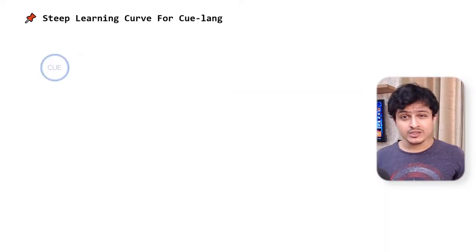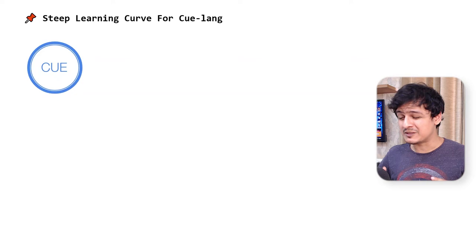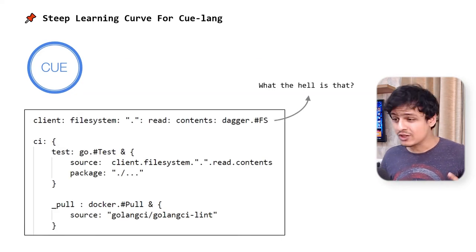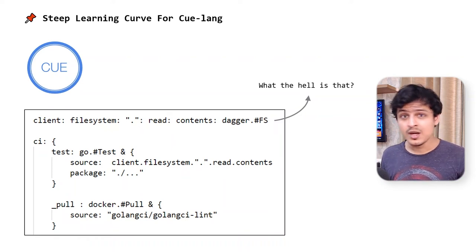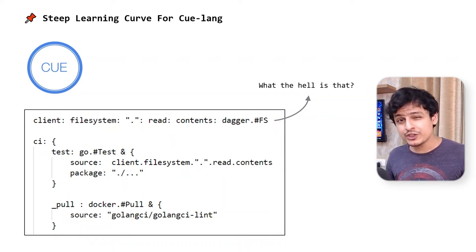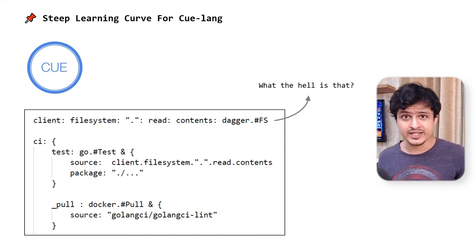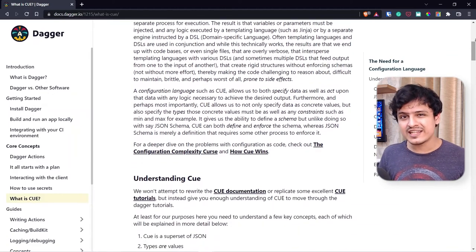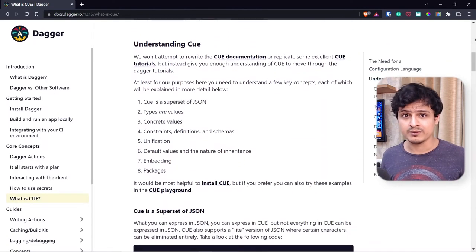Now let's move on to the cons of Dagger. The biggest advantage of Dagger is also one of its biggest downsides: CUE. CUE is difficult to understand — it's got a bit of a learning curve attached to it. Moreover, since it's relatively new, the official docs for CUElang are kind of difficult to navigate. Having said that, Dagger does cover a basic guide on CUE which can help you get started in no time.